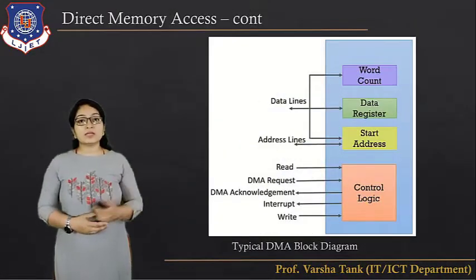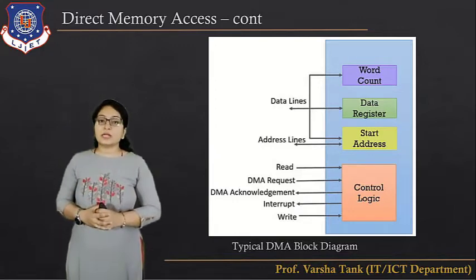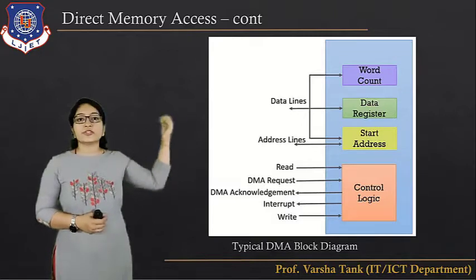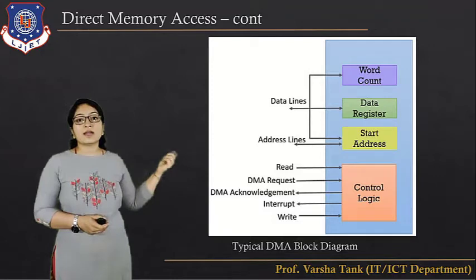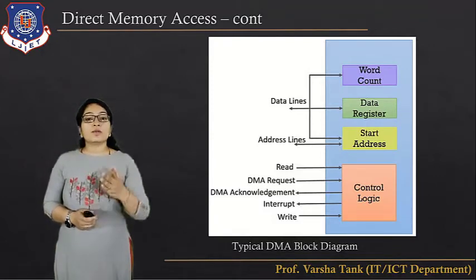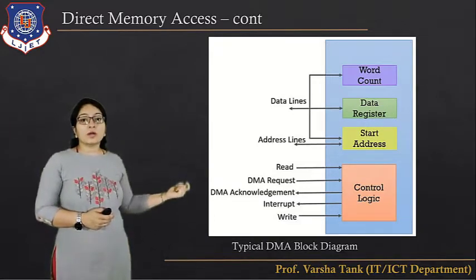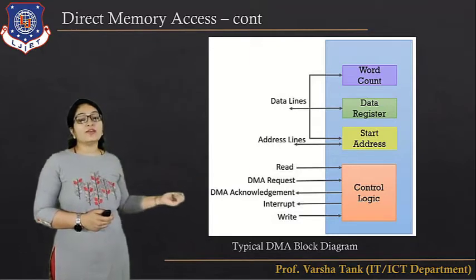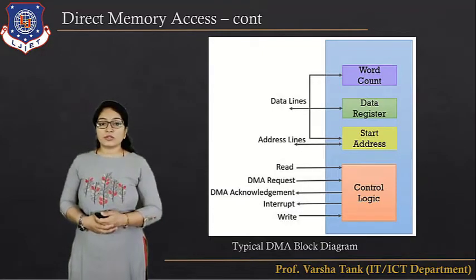Now let's see everything defined in the figure. This is the typical DMA block diagram. Here you can see the control logic, starting address, data register, and word count. The control logic defines the read, DMA request, DMA acknowledgement, interrupt, and write signals — all defined in the DMA block diagram.